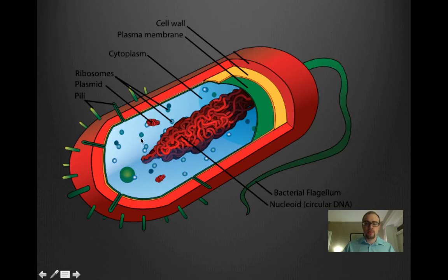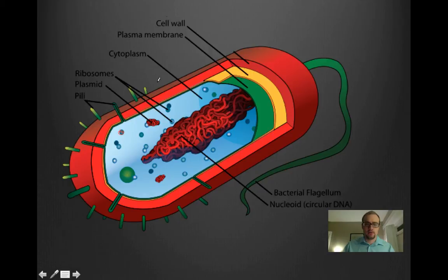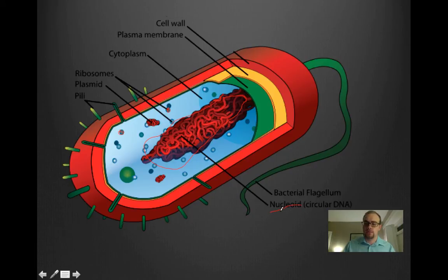As a quick visual recap: the ribosomes are these small organelles dotted throughout the cell. This entire region here would be considered the nucleoid region. Unlike in eukaryotic cells where genetic material is contained within the nucleus, in bacteria it is free-floating but clustered together in the nucleoid region. We also have the cell membrane, also called the plasma membrane, which is found underneath the cell wall. The cell wall is on the exterior and is more rigid, providing support to the bacterial cell.